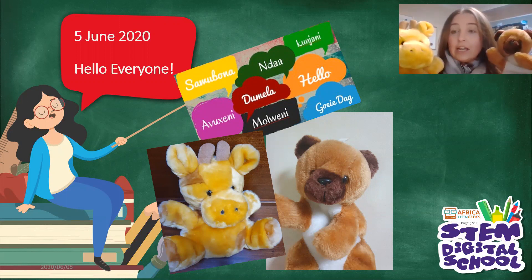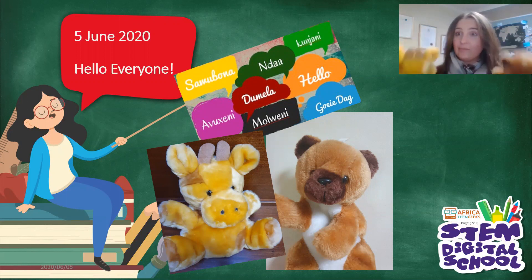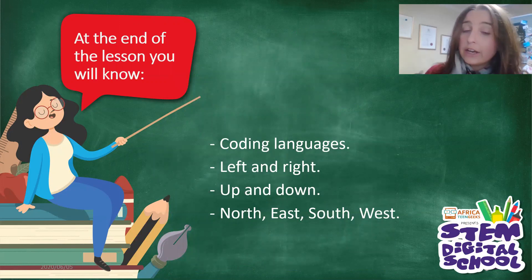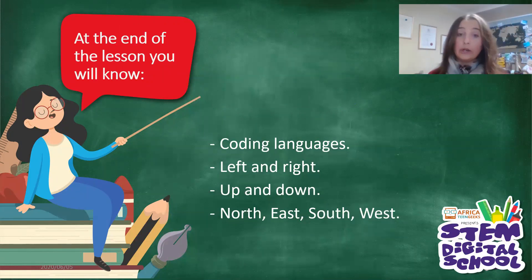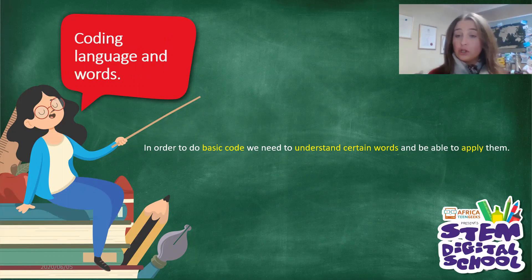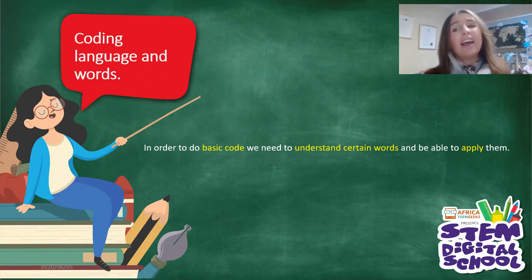Everyone, are you ready to go practice your coding by using left and right and up and down? Let's find out how it works. We are going to do coding language, which of course includes left and right, up and down, and then we are going to use northeast, southwest like I've been explaining. In order to do our basic code, we need to understand certain words and be able to apply them. That's important — it doesn't help that we know the words but don't know how to use them.